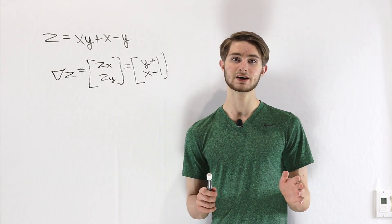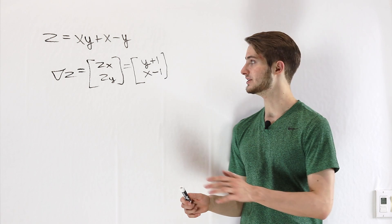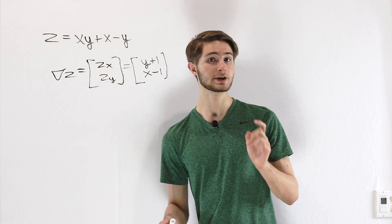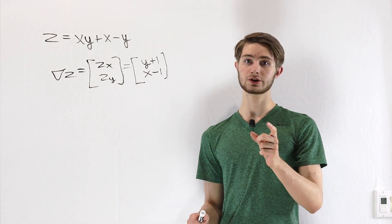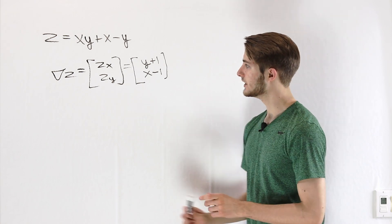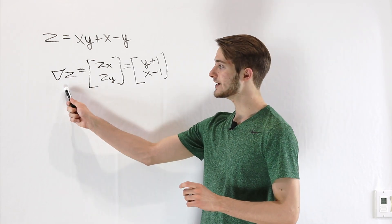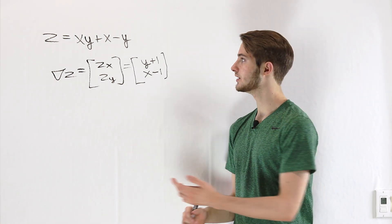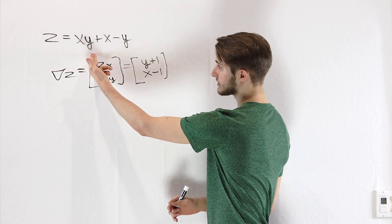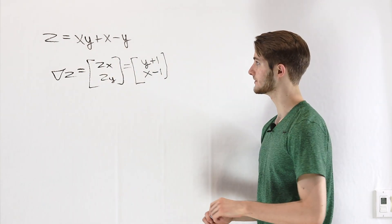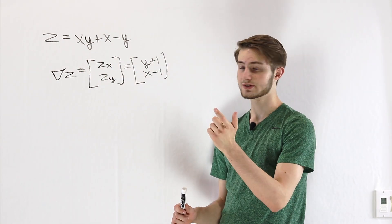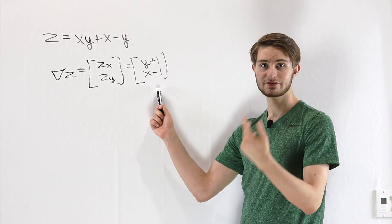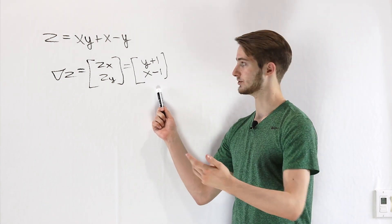The idea of a vector field is that we take a point or a vector as an input but we also return a vector as an output. The gradient of z is dependent on the values of x and y that we input into our function, and based on that input — that starting point — we get a vector as the result.